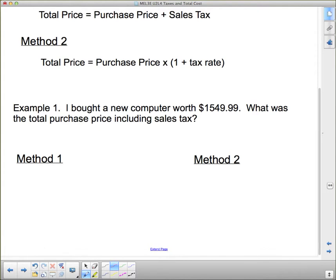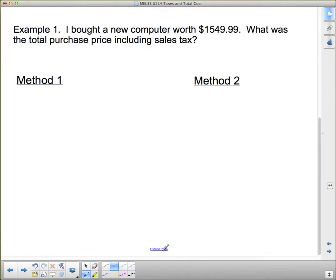Example one. I bought a new computer worth $1,549.99. What was the total purchase price including sales tax? Method number one has me finding the sales tax first. So I'm going to find the sales tax by taking the purchase price and multiplying it by the rate. In this case the purchase price is $1,549.99 times the tax rate which is 13%, 0.13.